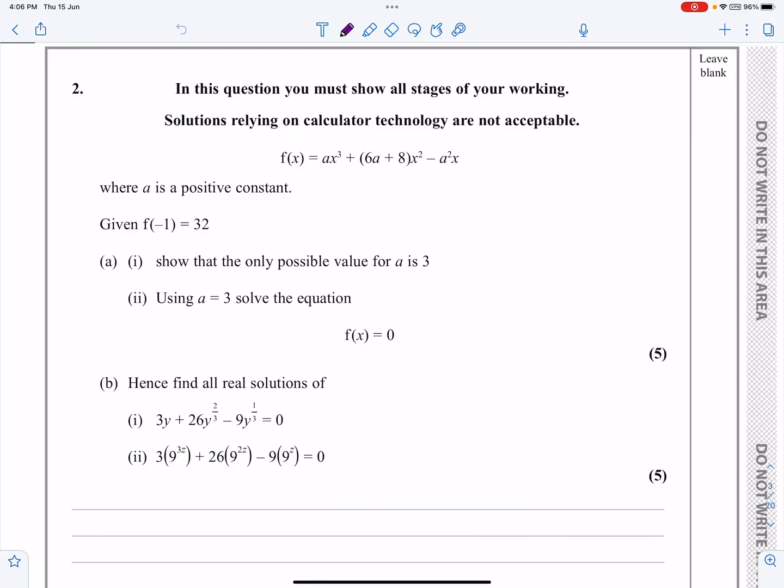Okay, this is the P1 paper from June 2021, question number two. If you have a look at it, you can see that there's a lot of work on algebraic expressions here. We're going to have negative and fractional indices later on. We're going to be factorising, but let's make a start and see what we've got to do.